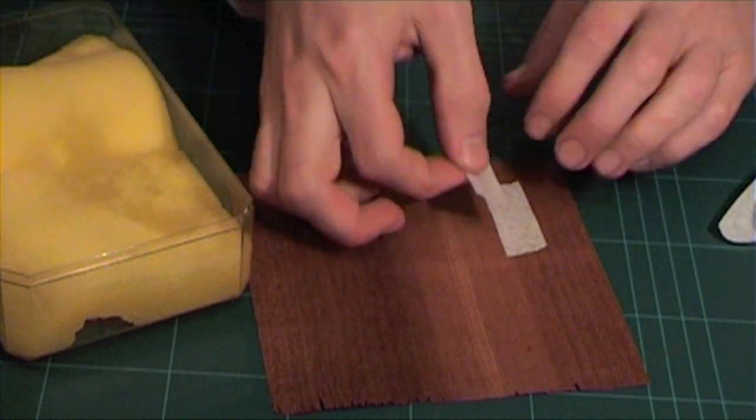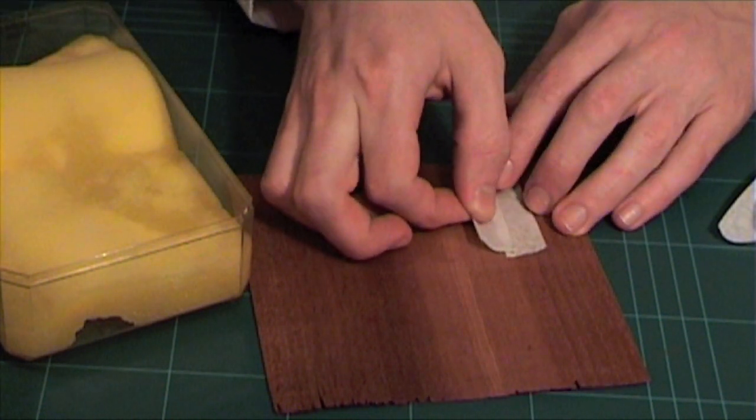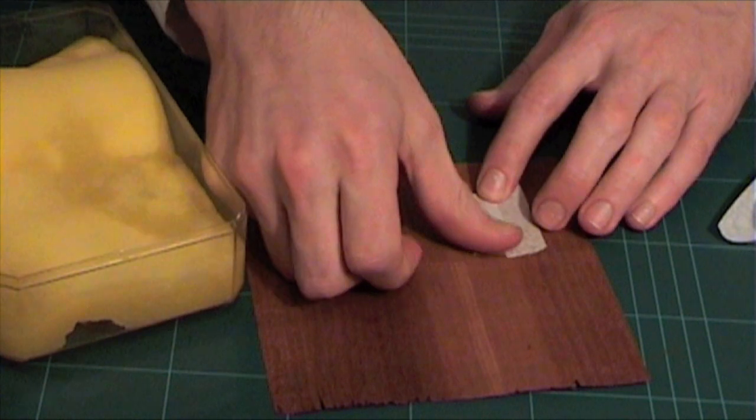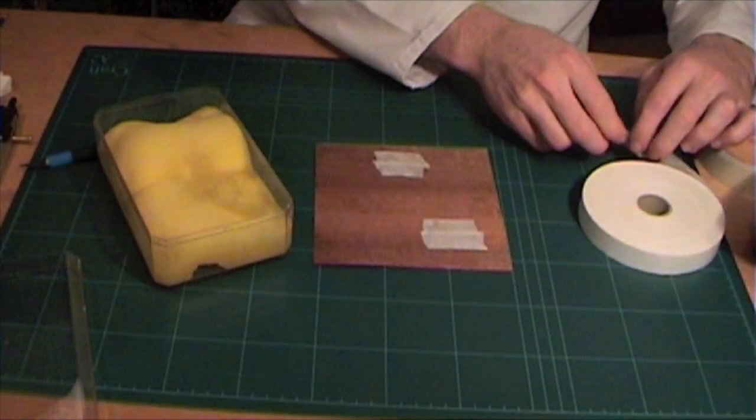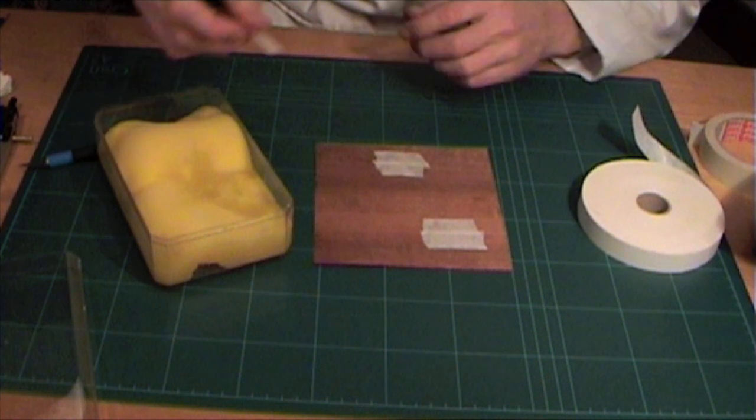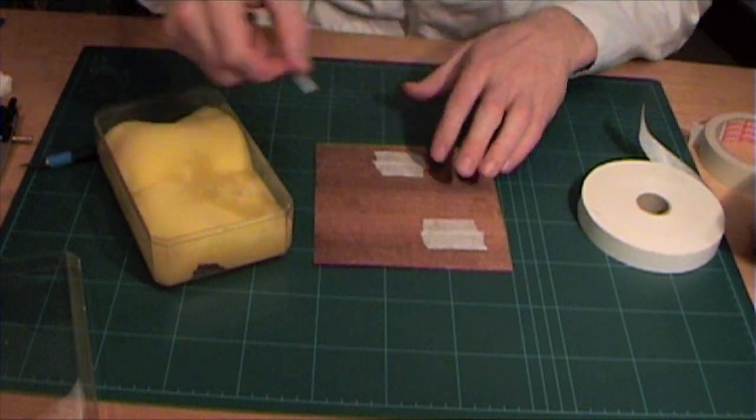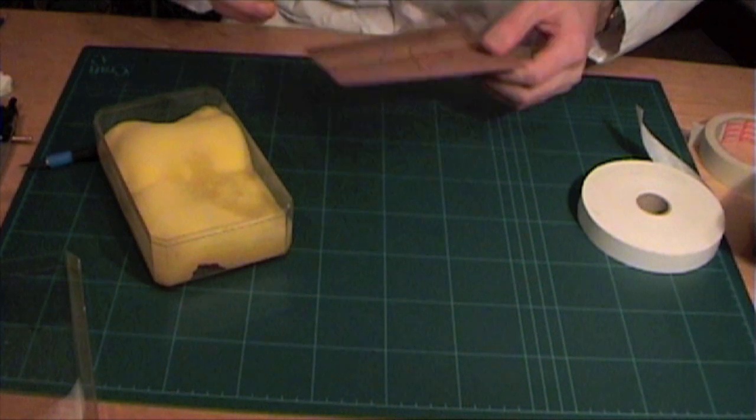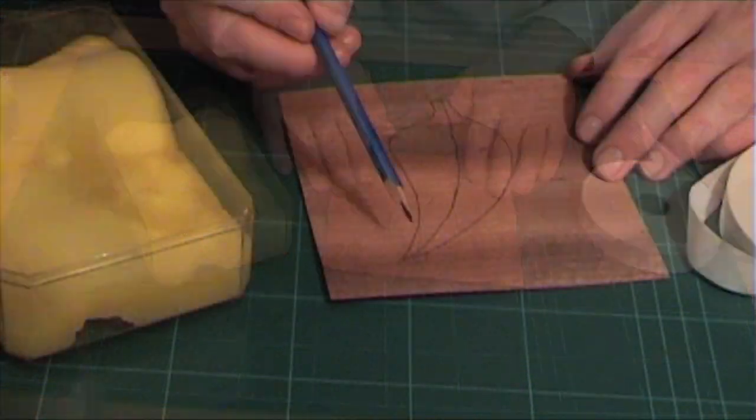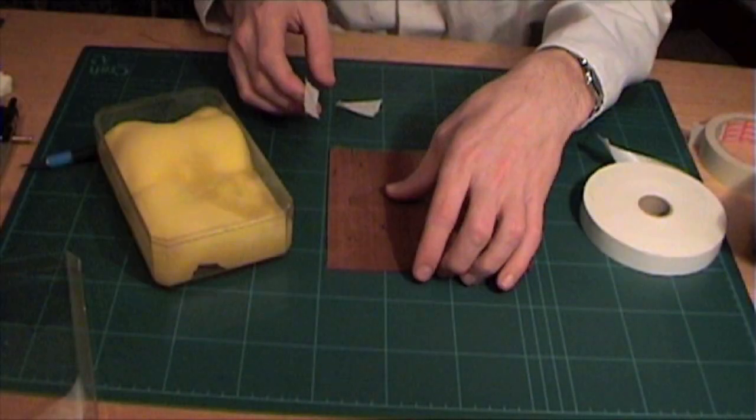Before any cutting takes place, it is important to reinforce certain places of the veneer with tape. Areas that need to be reinforced are acute angles and where sharp points are created, such as at the top of the leaf in this case.